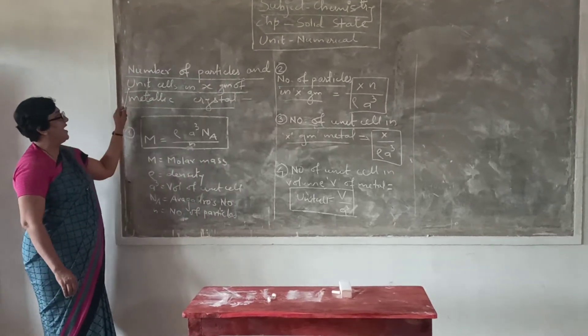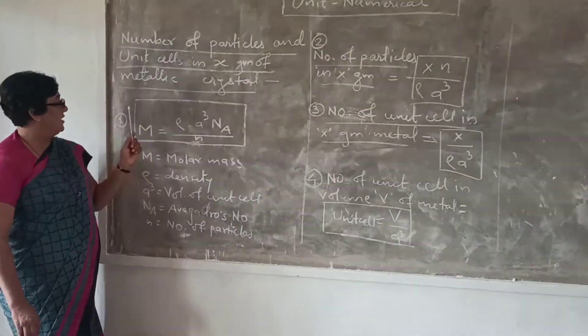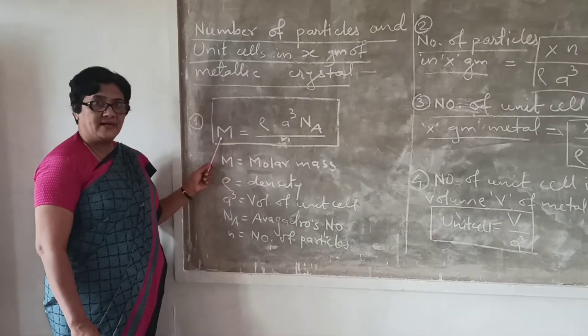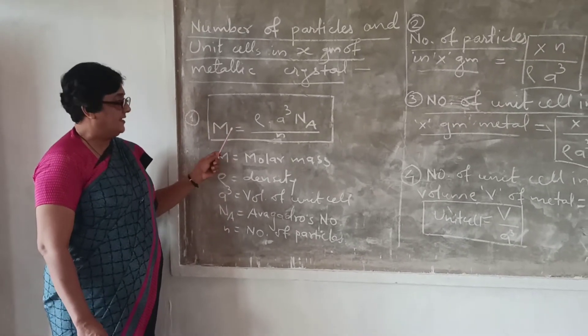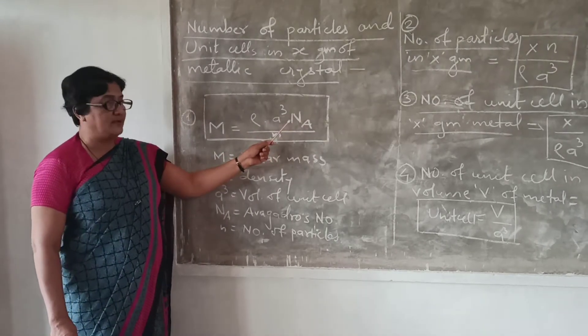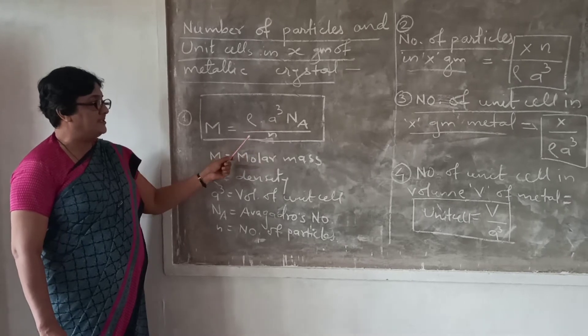The number of particles and unit cells in x gram of metallic crystal. The first formula for calculation of molar mass, that is molecular weight, is like this: rho into A cube into Avogadro number divided by N. What is the meaning of this symbol?